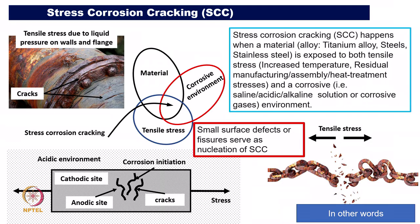Now we come to the last type of corrosion in this series — stress corrosion cracking, or SCC. Having covered uniform corrosion, galvanic corrosion, pitting corrosion, and crevice corrosion, SCC is very common in all kinds of mechanical systems. It requires three things: a susceptible material, a corrosive environment, and tensile stress. If any one is missing, this type of corrosion will not happen. If we can prevent the corrosive environment or tensile loading, SCC will not occur.